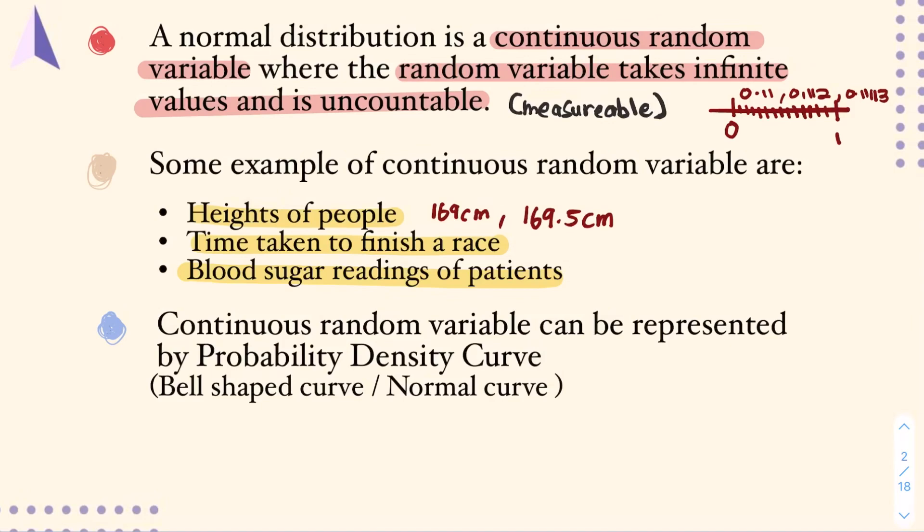Now, the continuous random variable can be represented by the probability density curve, or most people call it the bell-shaped curve or the normal curve. This is going to be the bell-shaped curve.